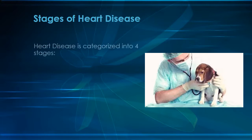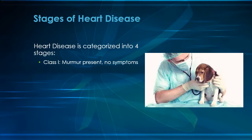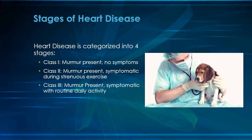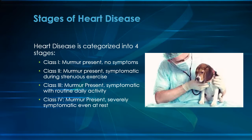Heart failure progresses predictably through four stages or classes. Class 1 is defined by a mitral murmur being present during auscultation but no symptoms noted by the owner — these pets are typically discovered during routine annual physical examination. Class 2 dogs have the murmur present and owners notice reduced exercise tolerance or coughing during heavy exercise, but are fine during normal activity. Class 3 pets show symptoms of heart failure during routine activity, whereas Class 4 pets are in advanced heart failure with difficulty breathing even at rest. These pets are very fragile and frequently will die from the disease if left untreated.